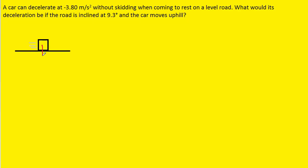One of the forces acting on the car is the downward gravitational force, which we can label mg. We have the surface of the road pushing up on the car, known as the normal force. And then there is a force causing the car to decelerate and eventually come to rest — that's going to be a frictional force between the tires of the car and the road. We can call that force F.